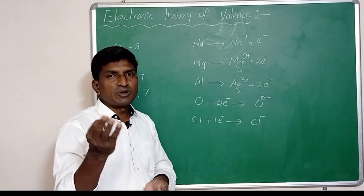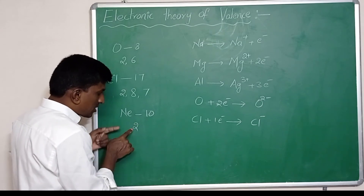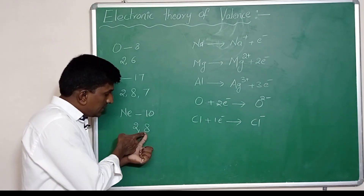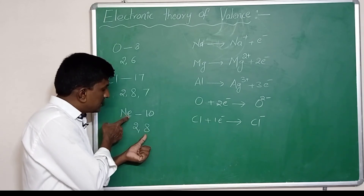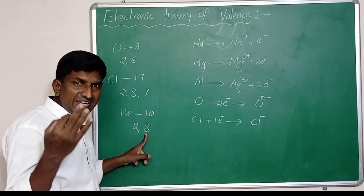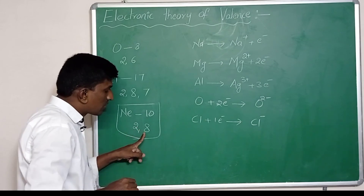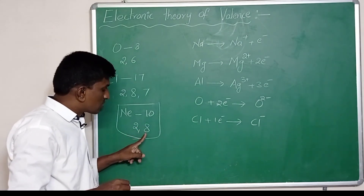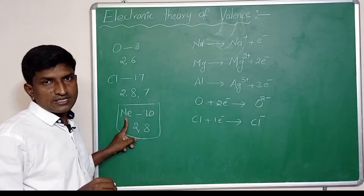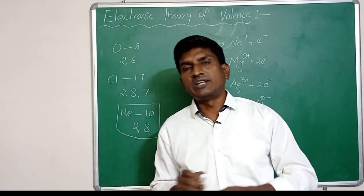For 18th group elements, consider neon with atomic number 10. It has 2 electrons in the first orbit and 8 electrons in the second orbit — total 10 electrons. In its outermost orbit, neon already has 8 electrons, so there is no necessity for gaining or losing electrons. Neon is unreactive, as it already has 8 electrons in its outermost orbit, and the same applies to all inert gases — they are stable with very low reactivity.